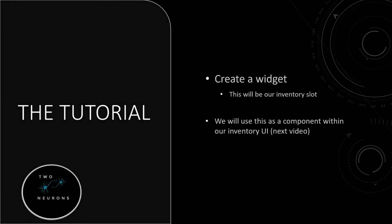In this tutorial, we'll create our widget — this will be our inventory slot. We will use this component within our inventory UI, which we'll make in the next video. Then two videos after that, we're actually going to have our items be added to that slot and see our inventory system is fully working. I am recording this after doing those videos, so I can tell you it is working and there are no changes to be made.